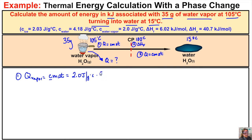We multiply by the mass of 35 grams times the change in temperature. The final temperature is 100 and the initial is 105, so final minus initial gives us negative 5 degrees Celsius. We put this in our calculator: 2.0 times 35 times negative 5, and we end up with negative 350 joules. That's the amount of energy the water vapor is going to release going from 105 to 100 degrees Celsius.